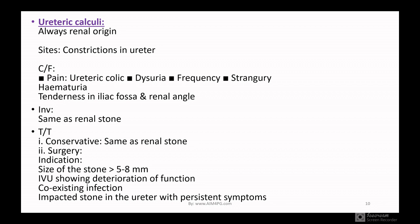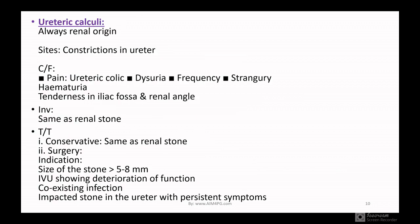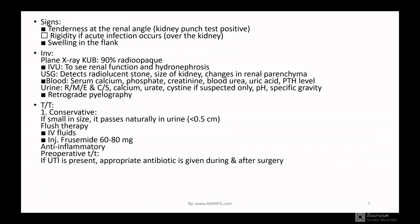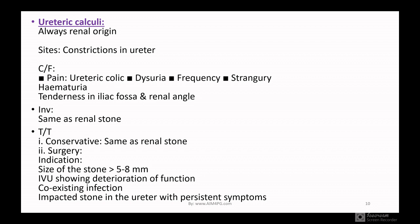If we don't discuss ureteric calculi, the discussion is incomplete. Ureteric calculi are always of renal origin. They can pass as fragments into the ureter. The sites are usually at constrictions in the ureter. Clinical features include ureteric colic pain, dysuria, increased urinary frequency, strangury, and hematuria, with tenderness in the iliac fossa and renal angle. Investigations are the same as for renal stone: X-ray, IVU, USG, blood, and retrograde pyelography. Treatment: conservative management same as renal stone. Surgery is indicated if stone size is more than 5–8 mm, IVU shows deterioration of function, coexisting infection is present, or stone is impacted in the ureter with persistence.